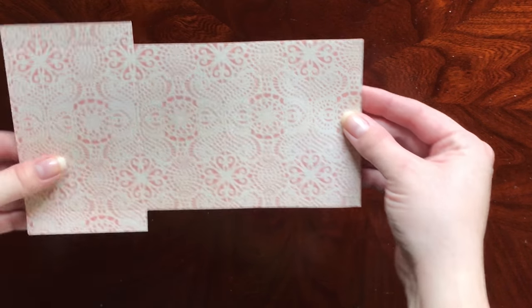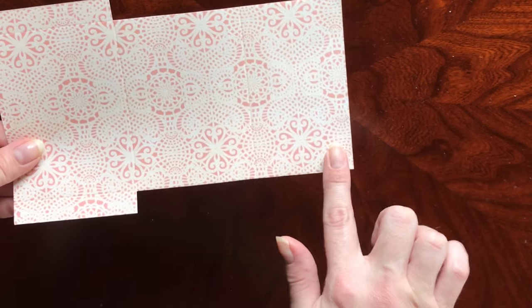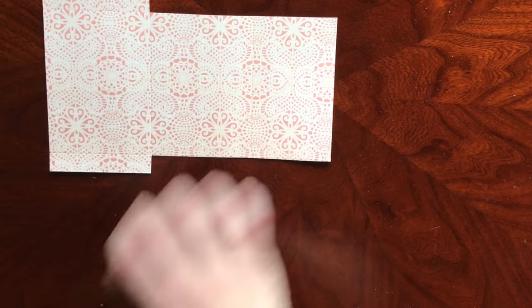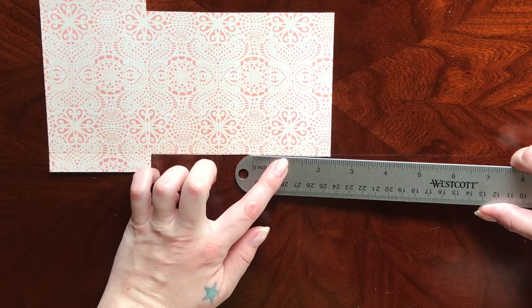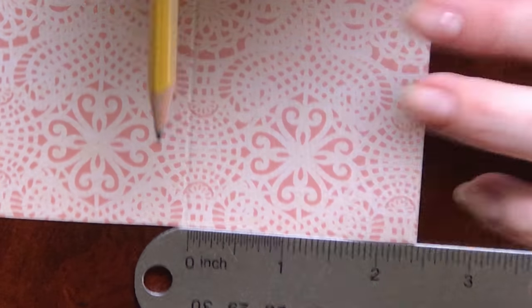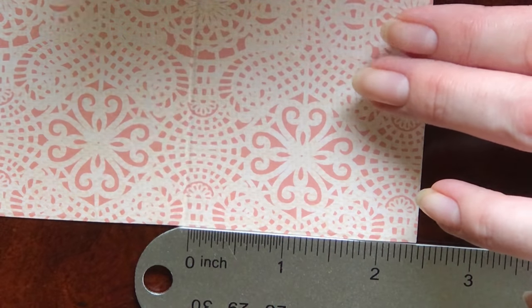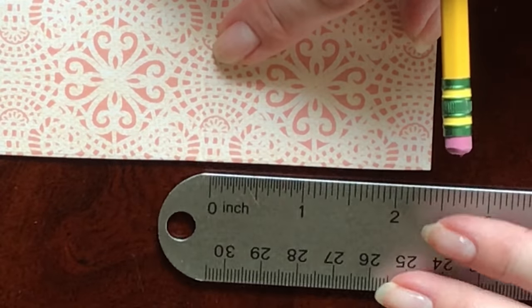Once you've done that, you'll have something that looks like this. Next, we're going to measure on this side one inch in from the scored line. This is going to be the top flap.